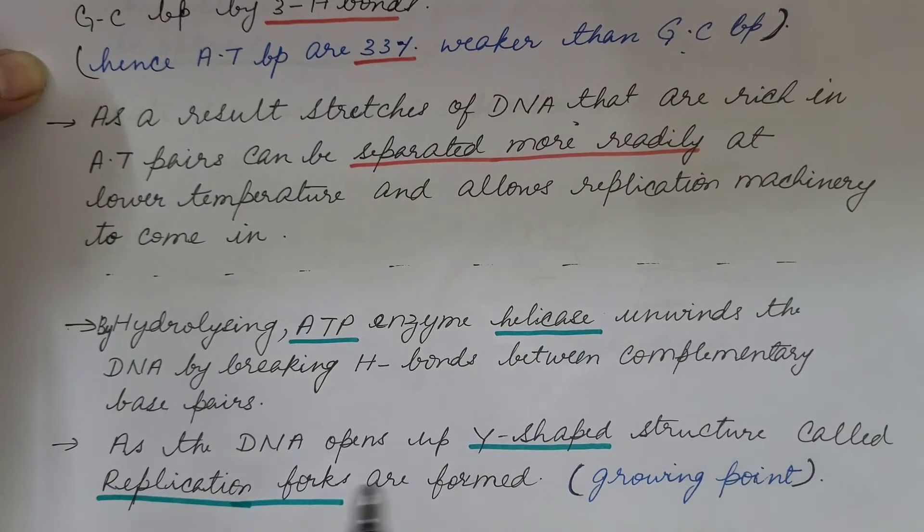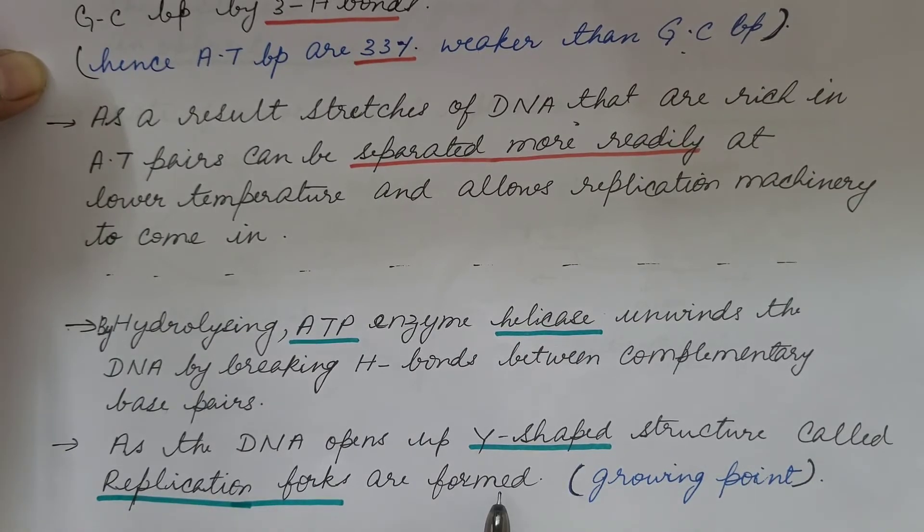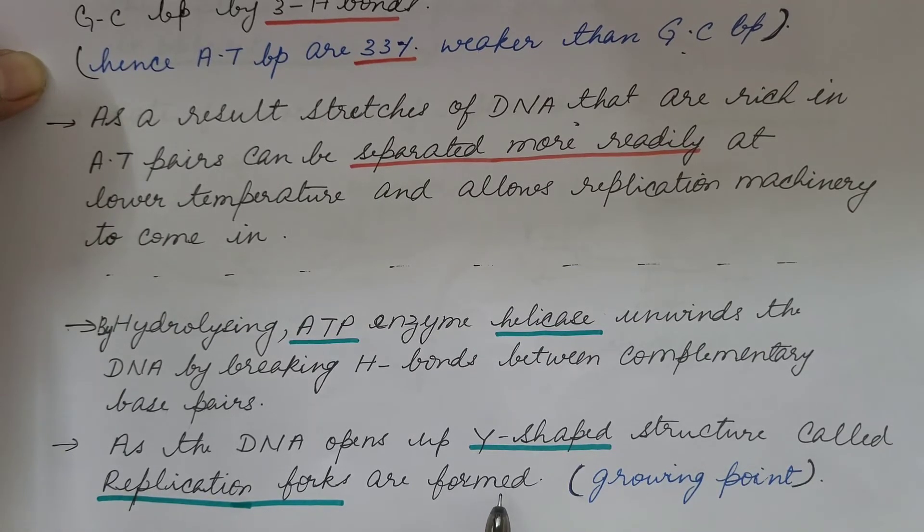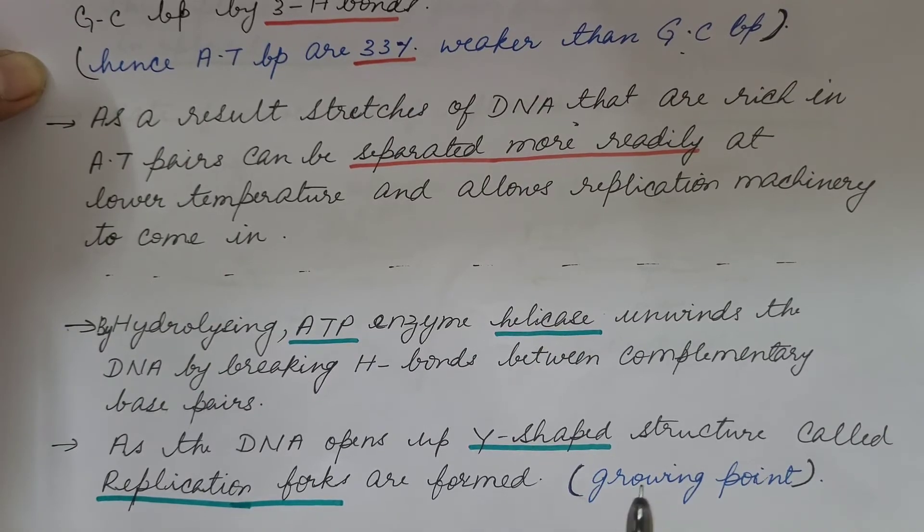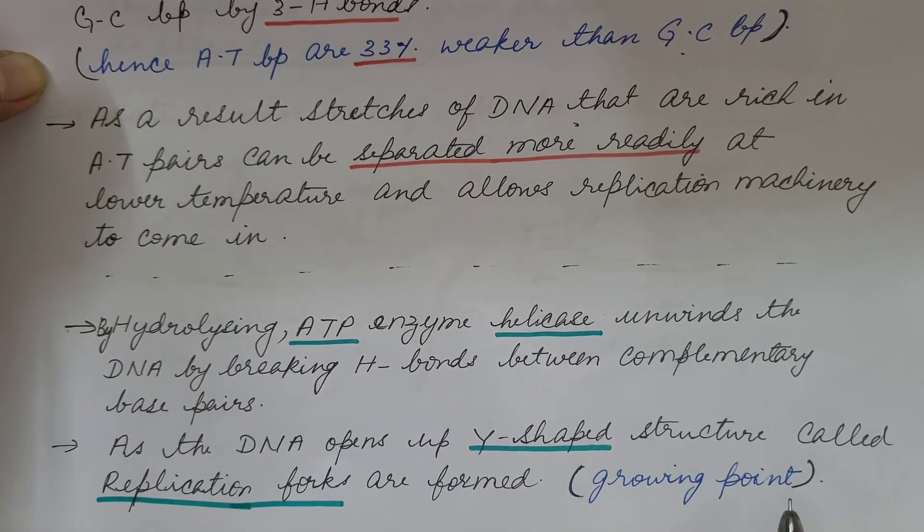As the DNA opens up, Y-shaped structure called replication forks are formed and it is the point where the replication proceeds. Hence, it is known as growing point.